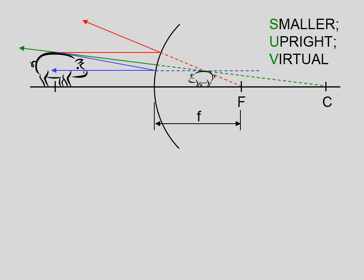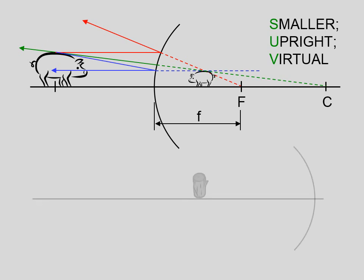It's smaller, it's upright, and it's virtual. There's no light that actually gets back here, because the light hits the mirror and goes back to the left. That's why we call it a virtual image.